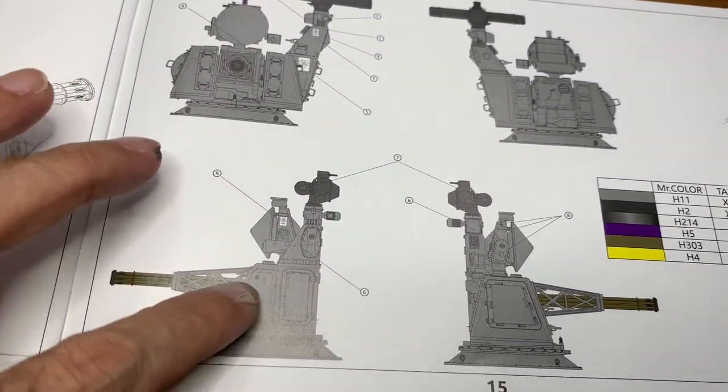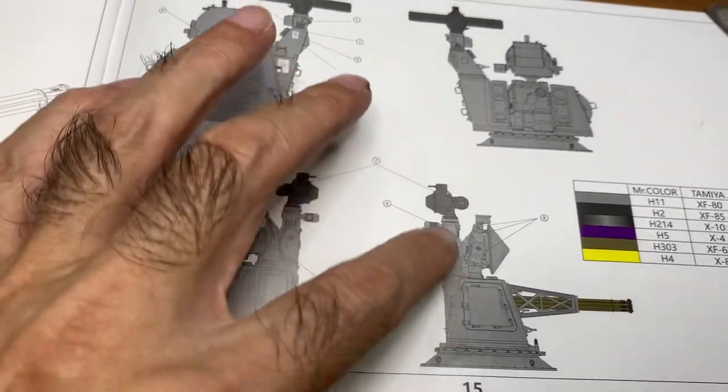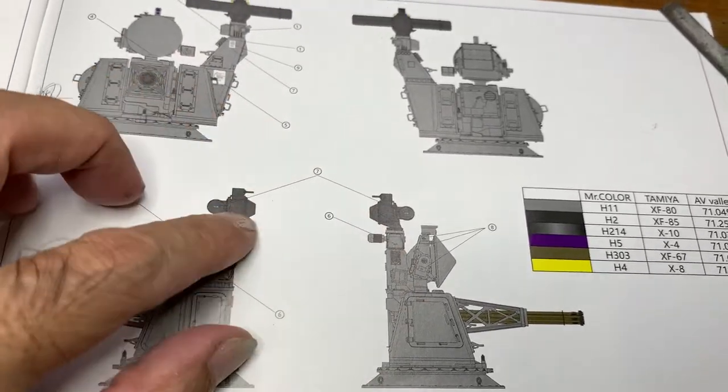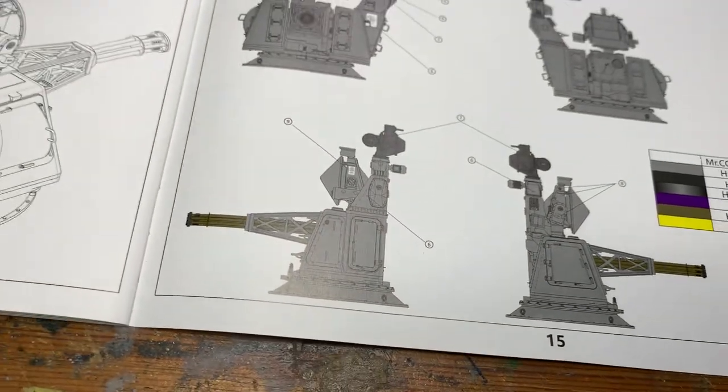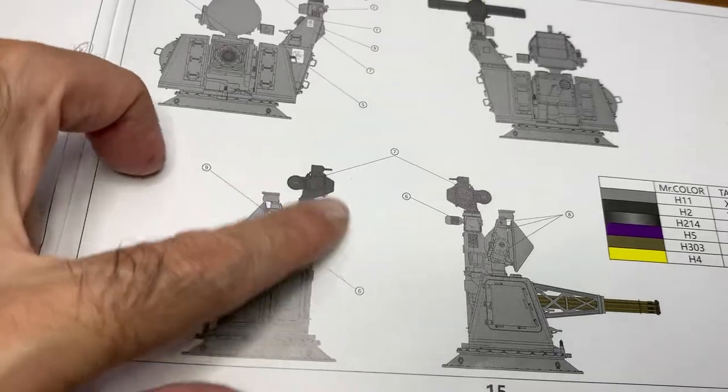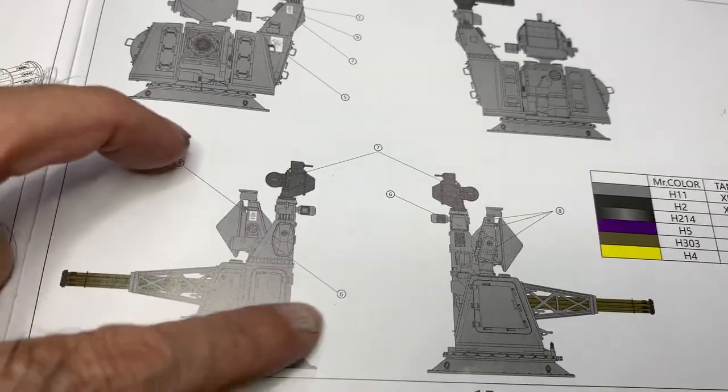After attaching everything, then I will start painting the entire thing in gray, then some places in black. Just like a tank, you can actually paint once you have completed the whole build.